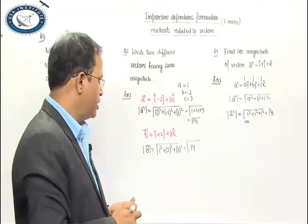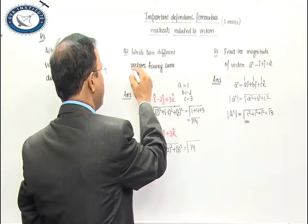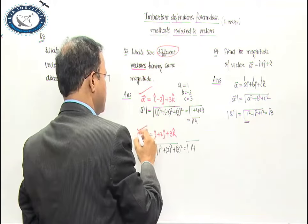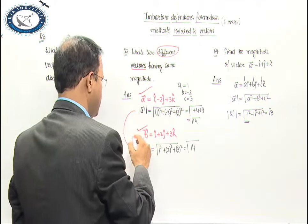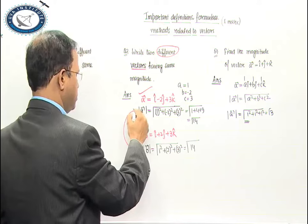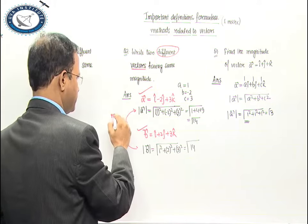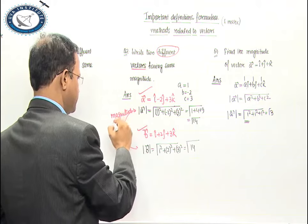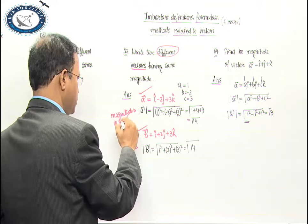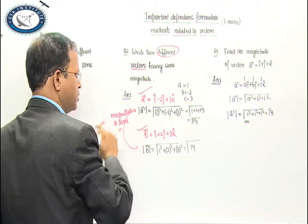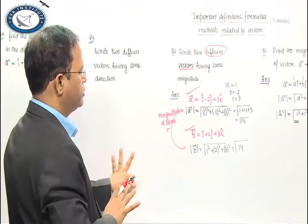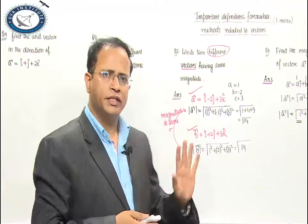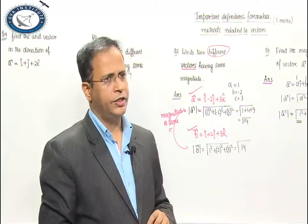So you can see that two vectors can be different but their magnitudes can be the same. Logically understand that two different vectors can exist with the same magnitude.